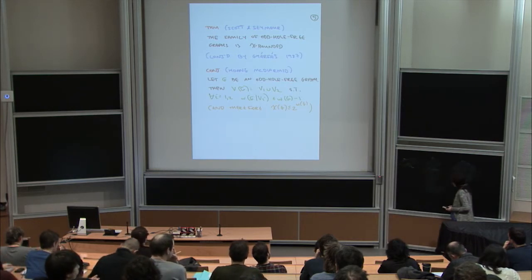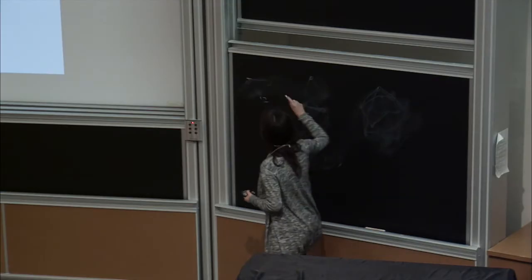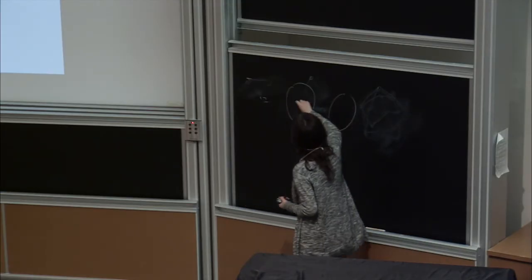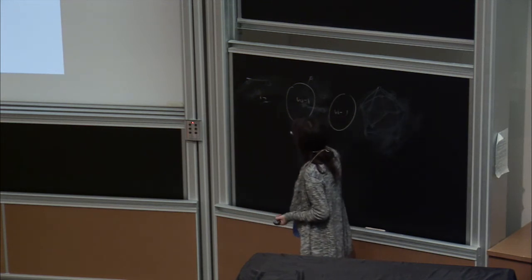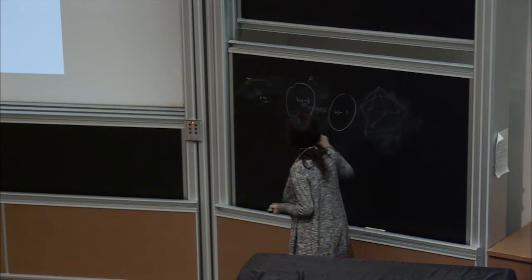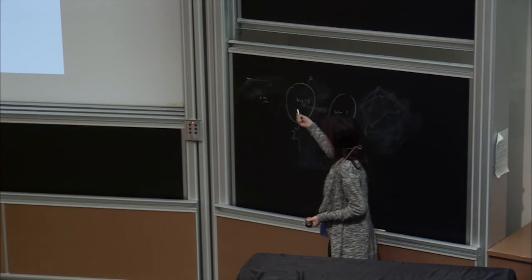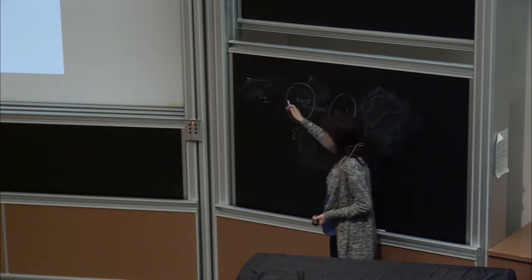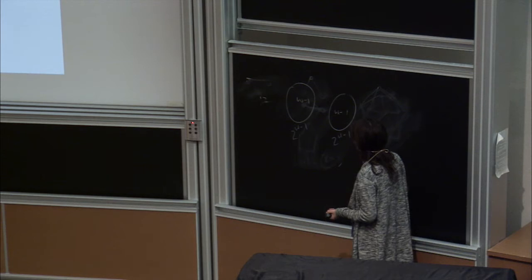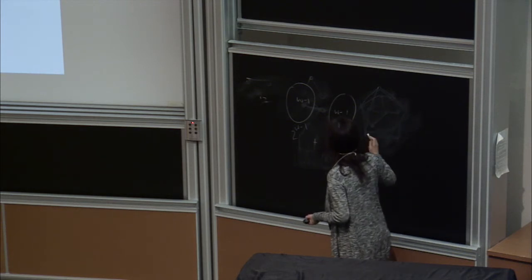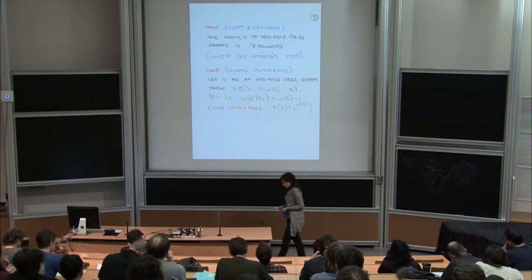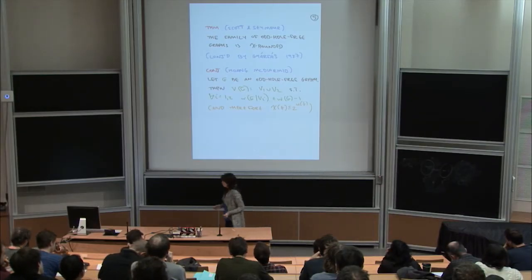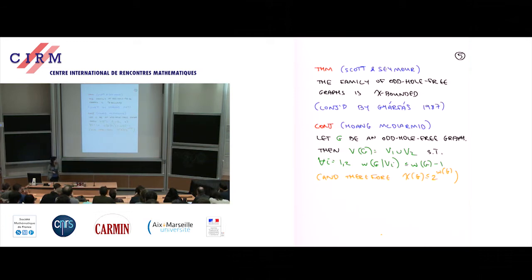To prove chi bounded by 2^omega by induction on omega: if you partition so that the clique number on each side is at most omega minus one, you can color each side with f(omega−1) colors using completely distinct colors on each half. That gives you the 2^omega bound. The Huang-McDermott conjecture would imply the family is chi-bounded, and in fact gives more — but it's still open.